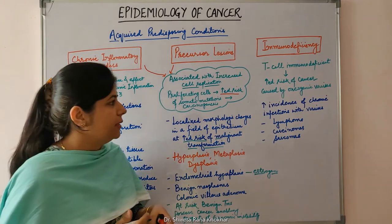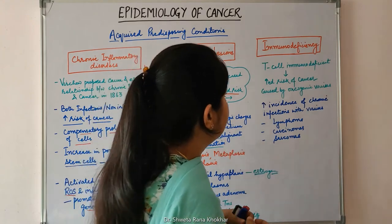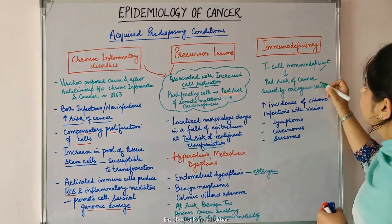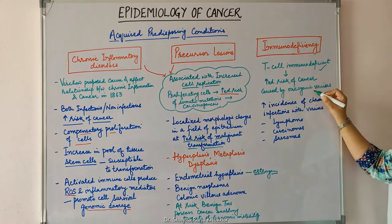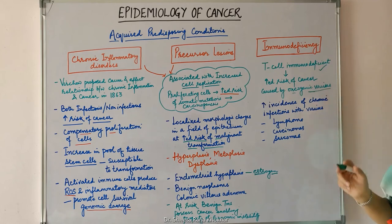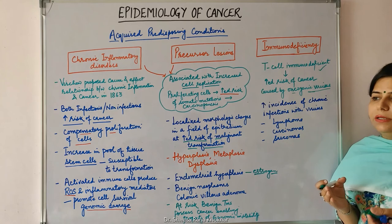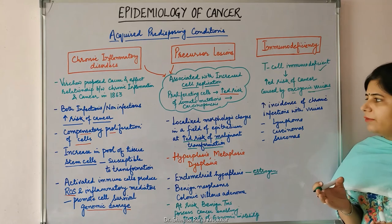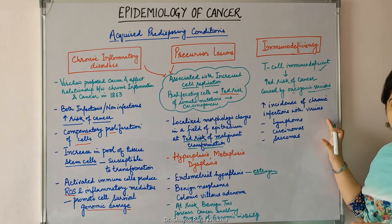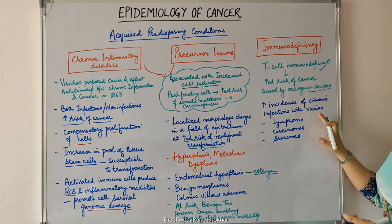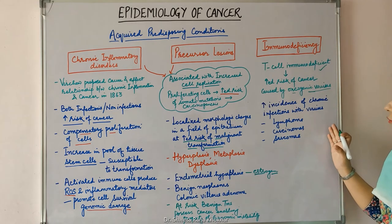Regarding immunodeficiency: immunodeficient patients, particularly those with T-cell immunodeficiency, are at increased risk of cancer development caused by oncogenic viruses. These oncogenic viruses include hepatitis B virus, hepatitis C virus, HTLV, human papillomavirus, and Epstein-Barr virus. There is increased incidence of chronic infection with these viruses in such patients, and they can cause lymphoma, carcinoma, and sarcoma.